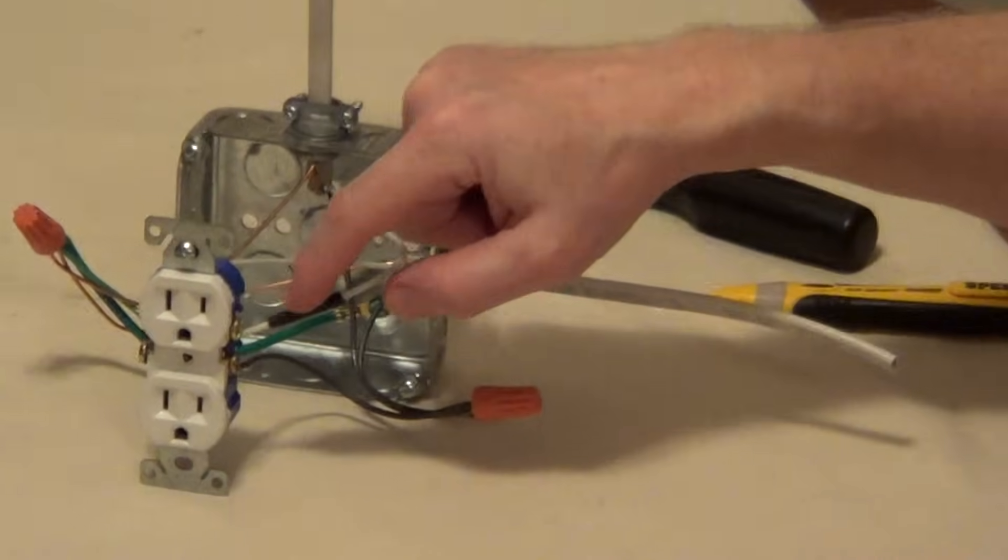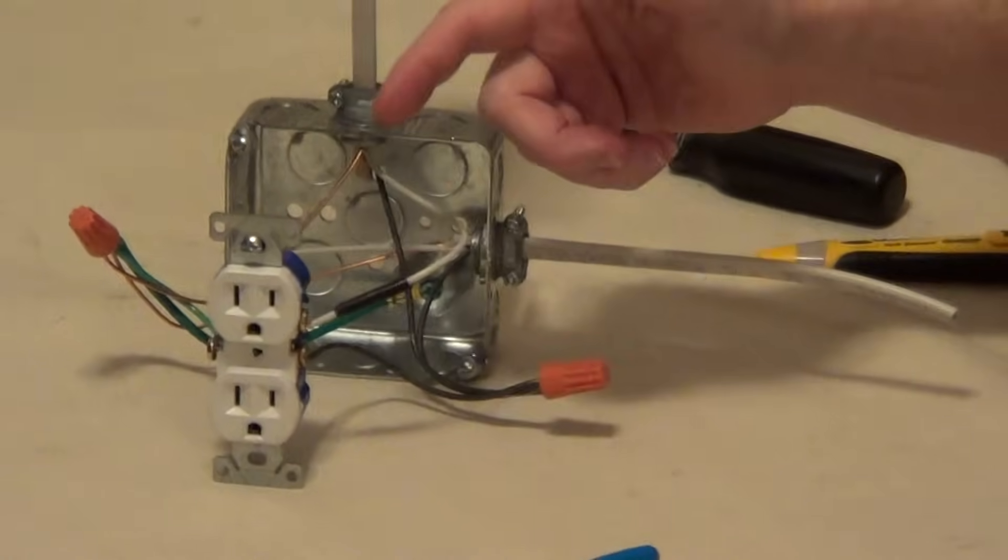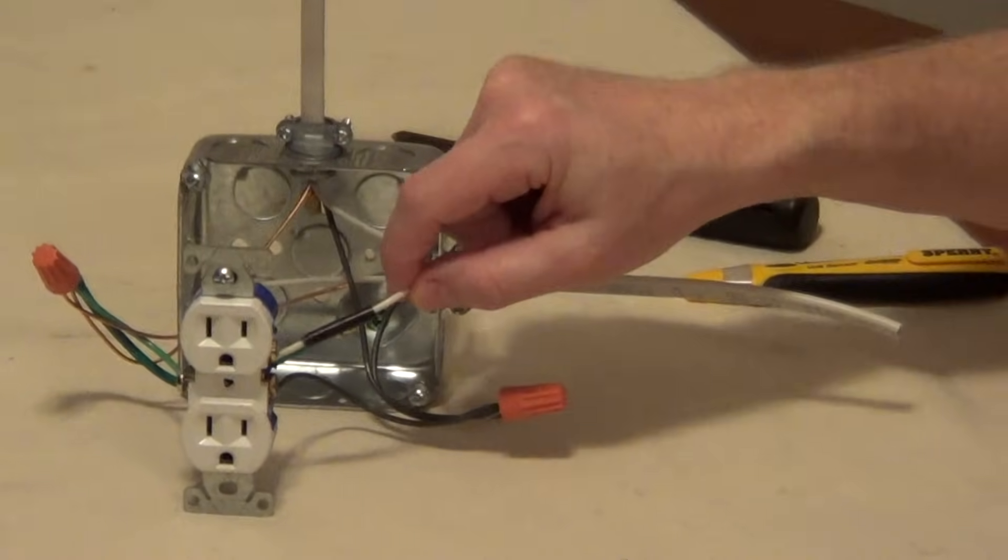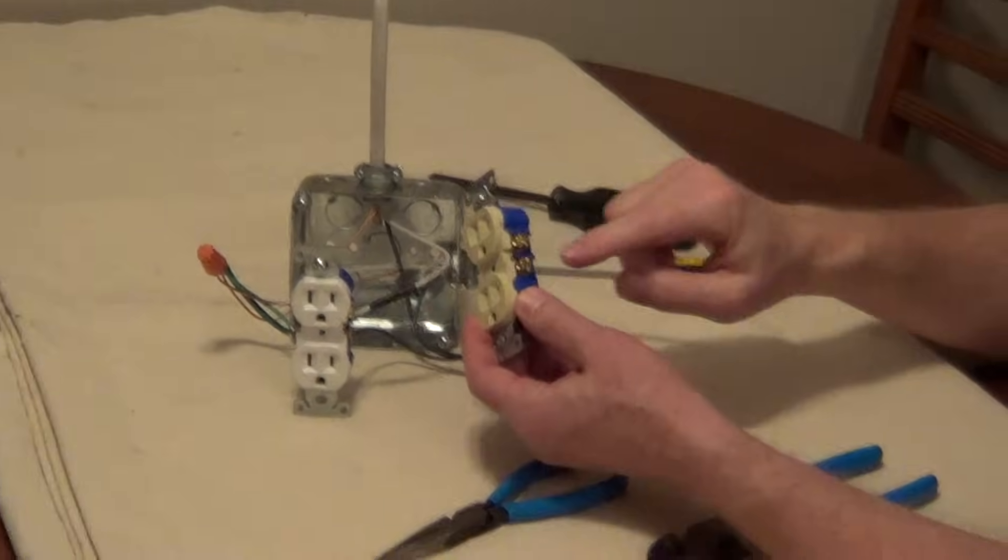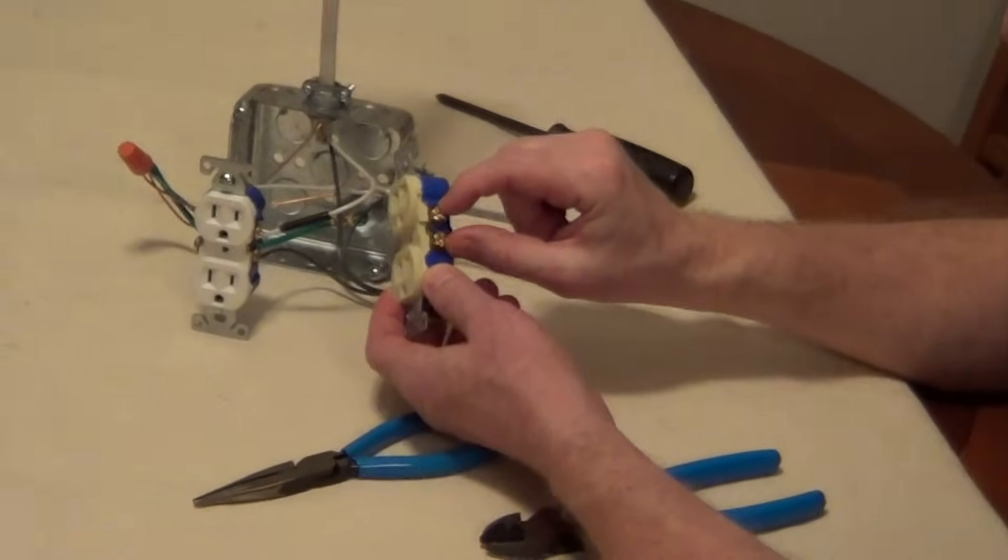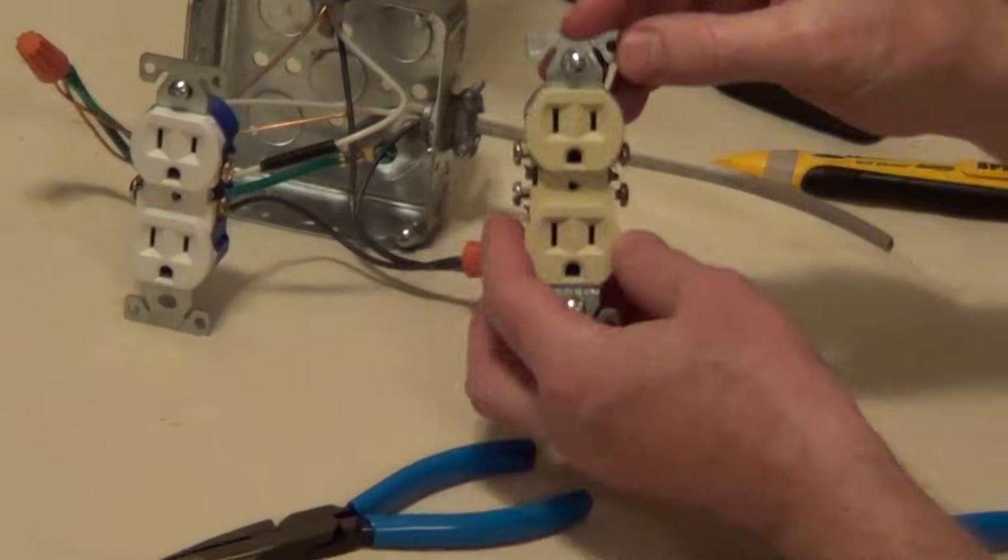And again, we have to mark this white with a piece of black tape or black paint so that everybody knows this is hot. But we can't have both of these screws with hot wires. So what we have to do when we replace this, we're going to turn off the power.